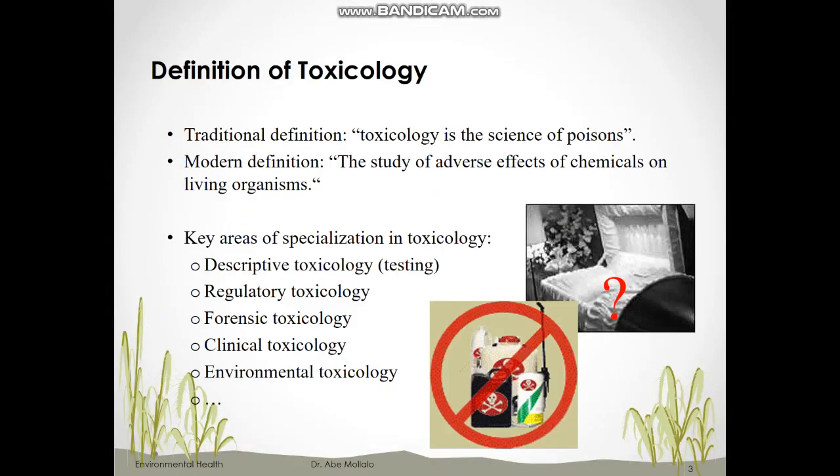What is toxicology? There are two definitions — traditional and modern. According to the classic definition, toxicology is the science of poisons. But a more comprehensive, modern definition is the study of adverse effects of chemicals on living organisms. The science of toxicology is not restricted to humans; it can be applied to other species and organisms like animals in wildlife or even plants.